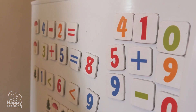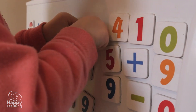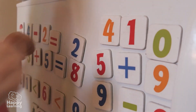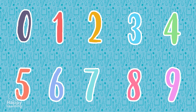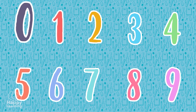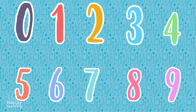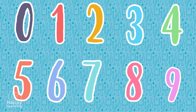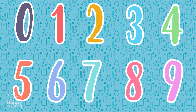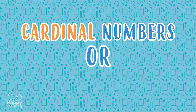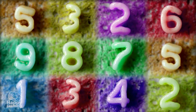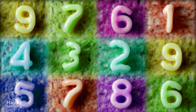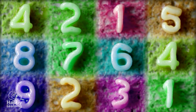Natural numbers are the ones we use to count, to add, to subtract, to do mathematical calculations, and also to put things in order. Depending on how we use them, we call these natural numbers cardinal numbers or ordinal numbers.